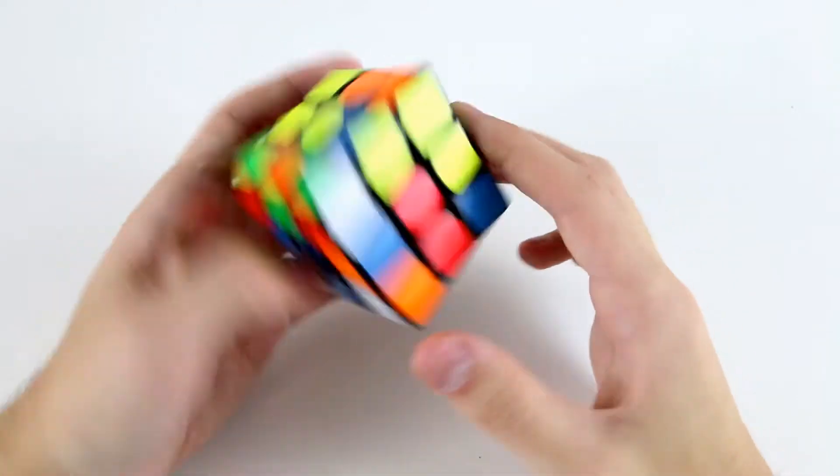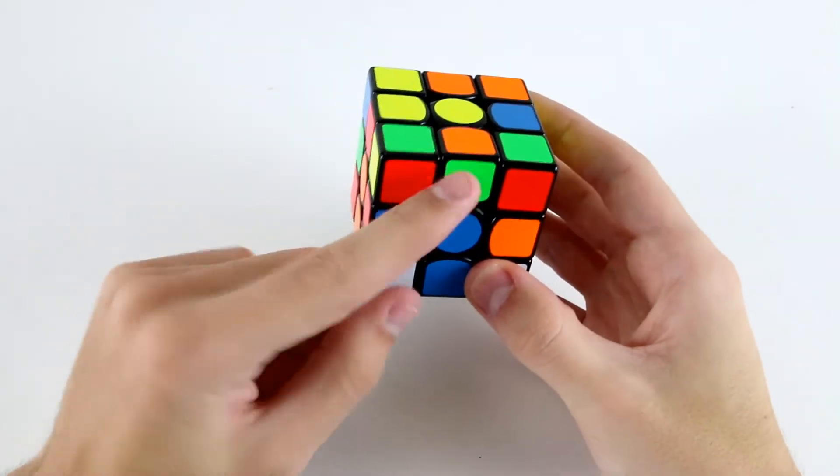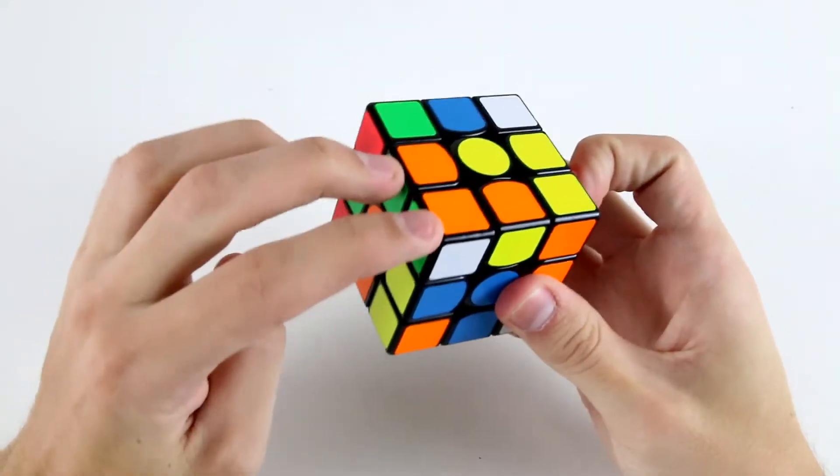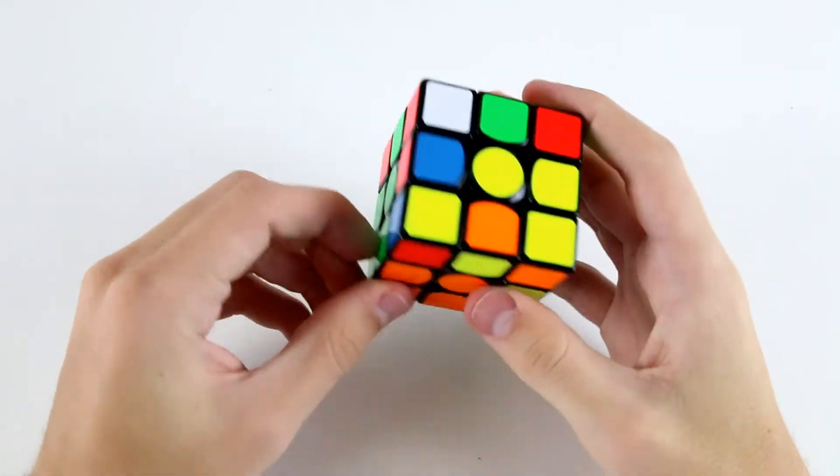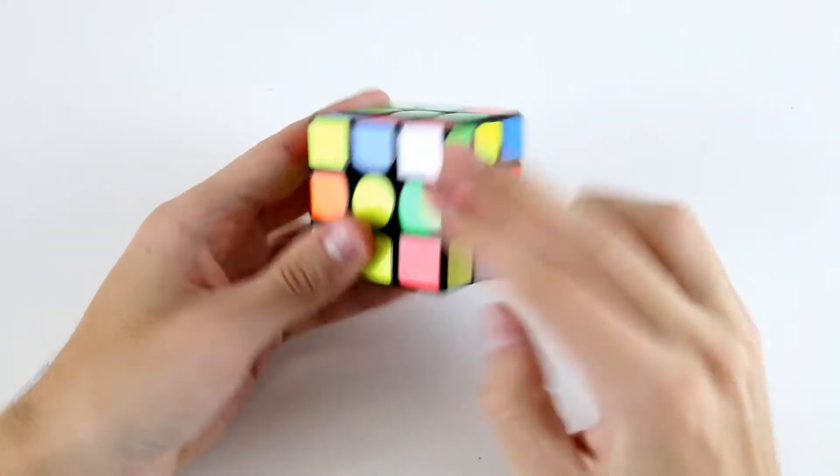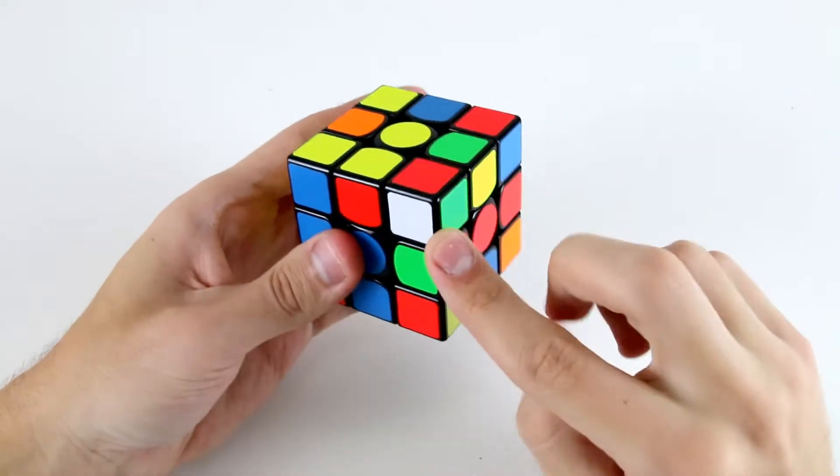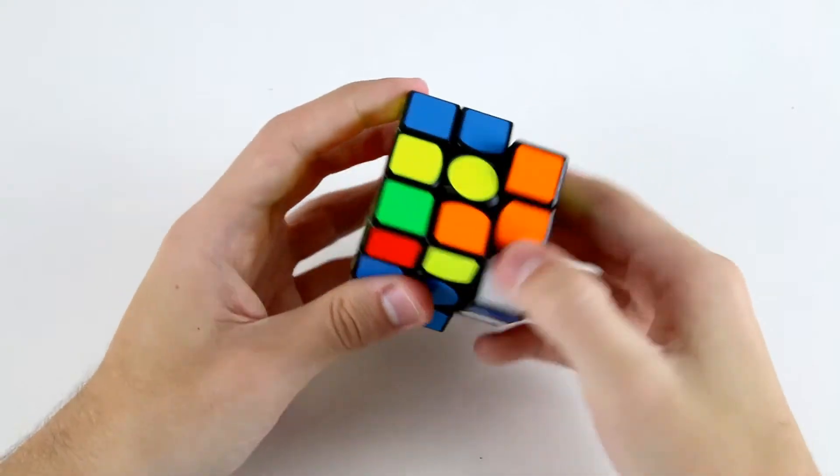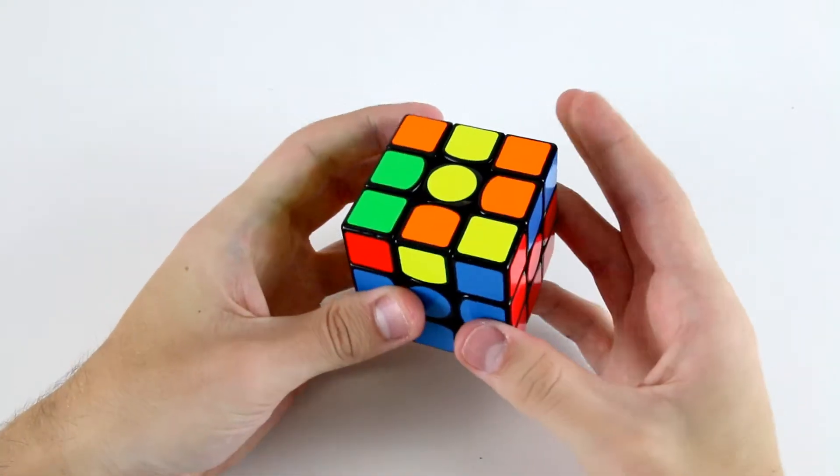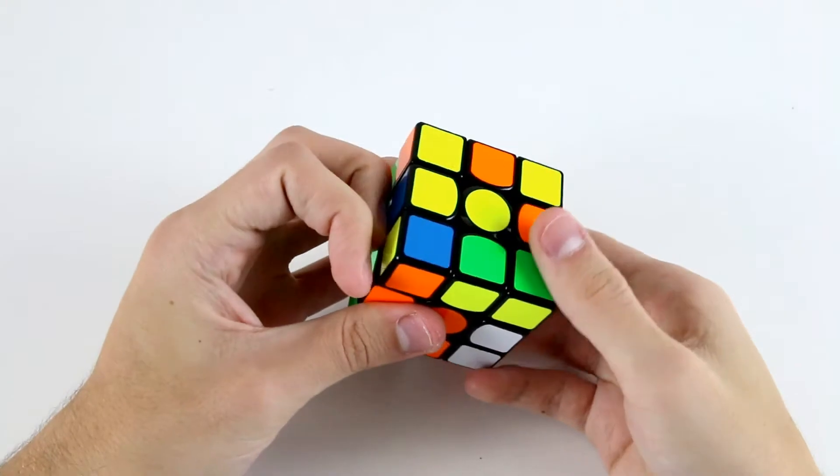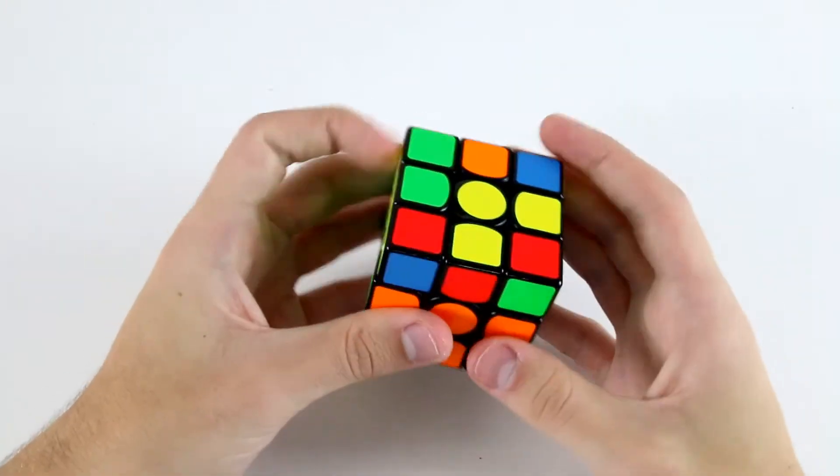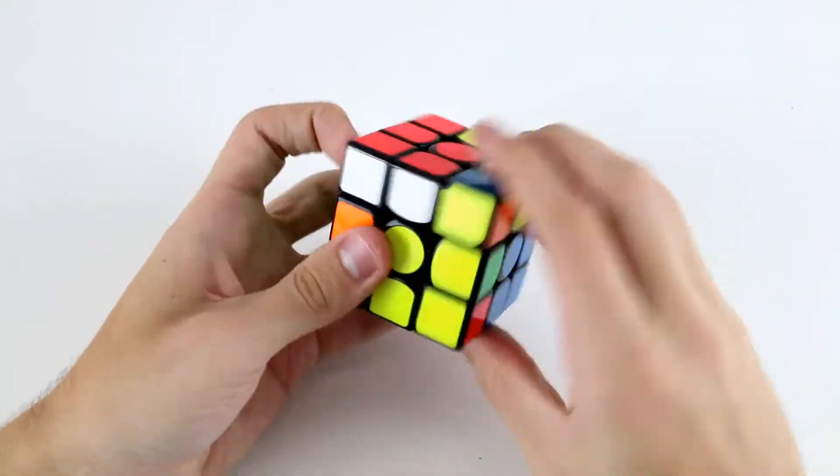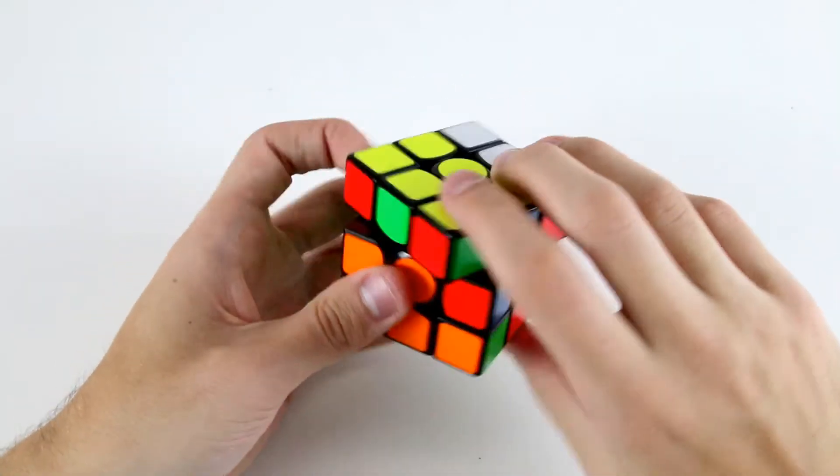The first F2L pair that I see may be these two, so I can solve them like this into that slot. Then the next ones I see are these two, so I'd rotate and solve these into the back slot like so. Then I've got these two like that, then these two, then OLL and then PLL, G permutation.